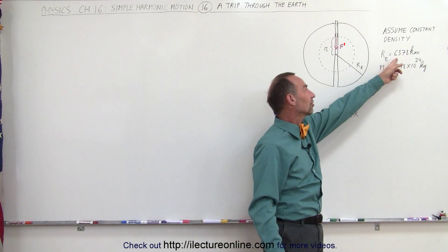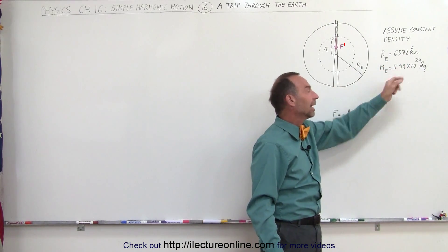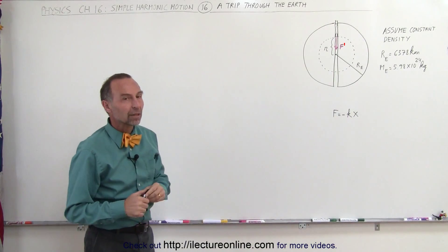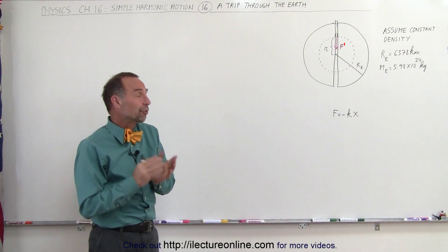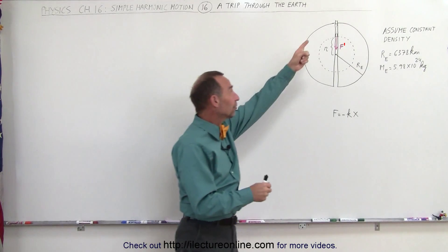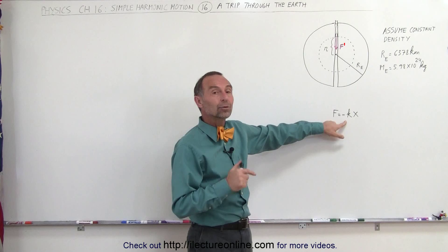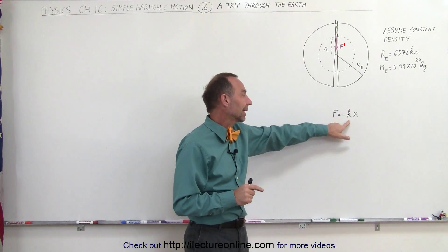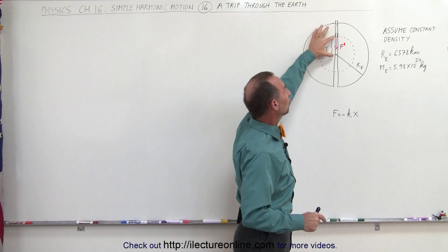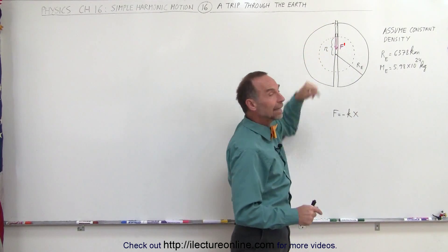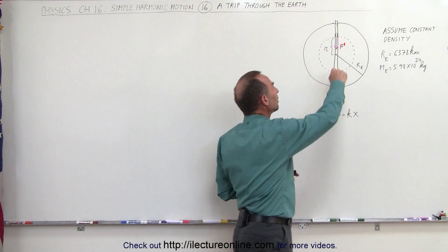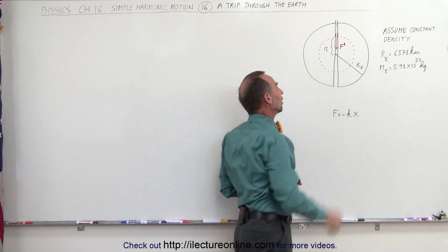We know the radius of the earth is 6,378 kilometers and the mass is 5.98 times 10 to the 24 kilograms. To do this problem we first need to show that the force acting on an object falling through the earth is indeed equal to minus kx, and we need to figure out what that k is. The x would be the distance from the center of the earth to where the object is, which we'll call small r.